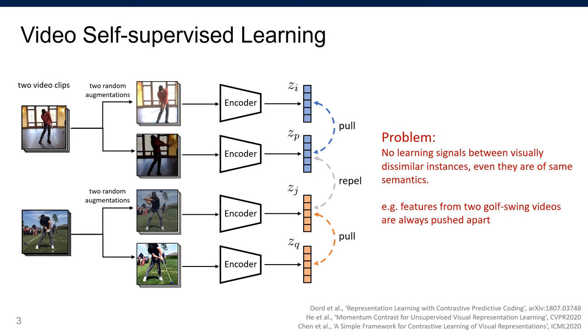For example, two different golf swing videos are always pushed apart. This is not an ideal representation, and we want to improve the representation in this aspect.